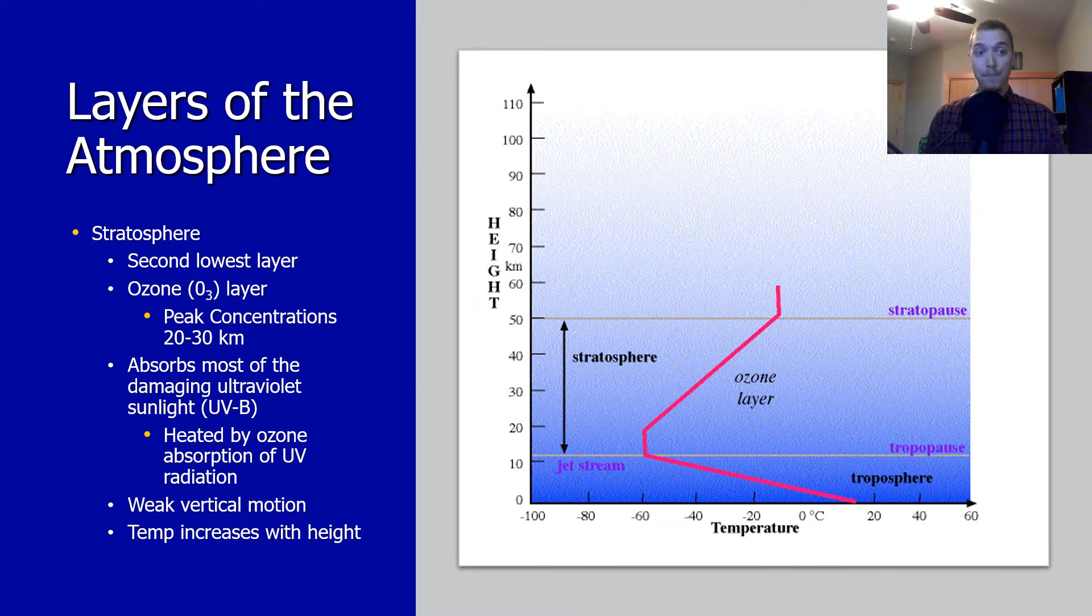Once we get above that, we have the stratosphere, the second lowest layer. Oftentimes it's your cruising altitude when you're flying from place to place. Ozone is prominent in this layer. This is good ozone. The ozone here absorbs a lot of the really intense solar radiation. The stratosphere extends from the tropopause up to about 50 kilometers above Earth's surface and holds about 19% of the atmosphere's gases, but very little water vapor.